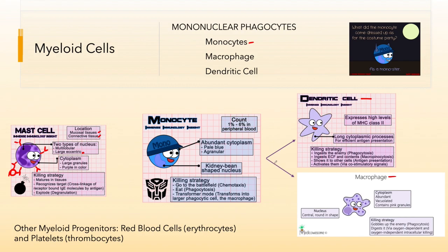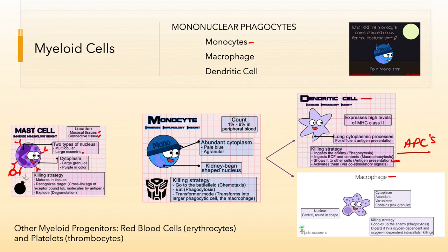Dendritic cells and macrophages are what we call antigen-presenting cells, or APCs. They are highly phagocytic — their primary job is to phagocytize antigens. Dendritic cells are particularly important because they go into lymphatic tissue and present antigen. Macrophages do this as well, but after antigen presentation they concentrate more on phagocytosis, whereas dendritic cells continue to present antigen and cause activation of the adaptive immune responses.